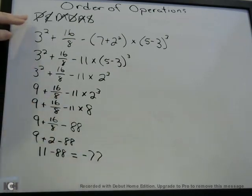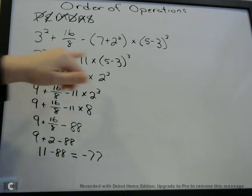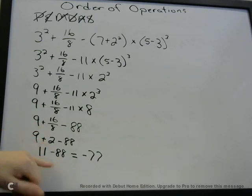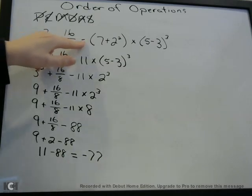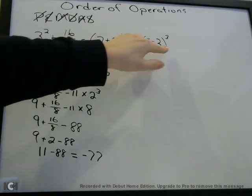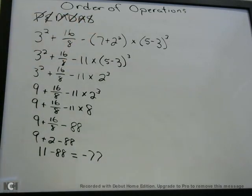So remember, PEMDAS — Please Excuse My Dear Aunt Sally. We had to do parentheses first, and then we looked at exponents, and then we did multiplication, and then we did division, and then we did addition, and then we did subtraction. You have to do that in that order. If you just evaluated 3 squared plus 16 divided by 8 minus 7 plus 2 squared times 5 minus 3 cubed going left to right, you would not get the right answer. You have to do it in this order. We're going to do one more example.